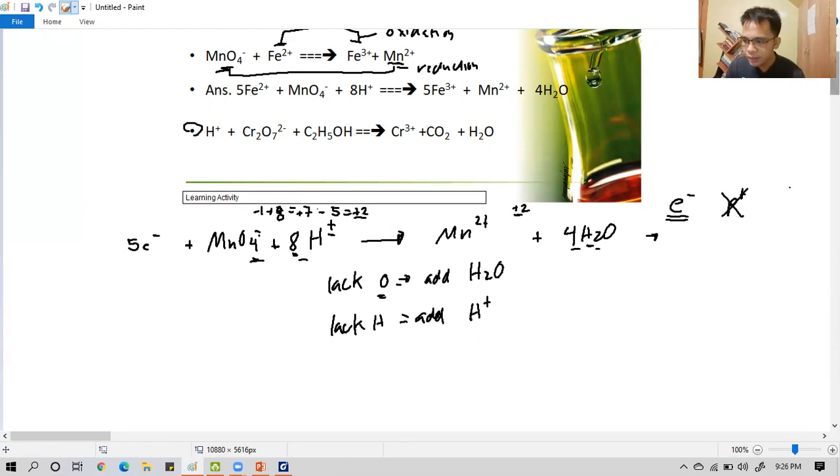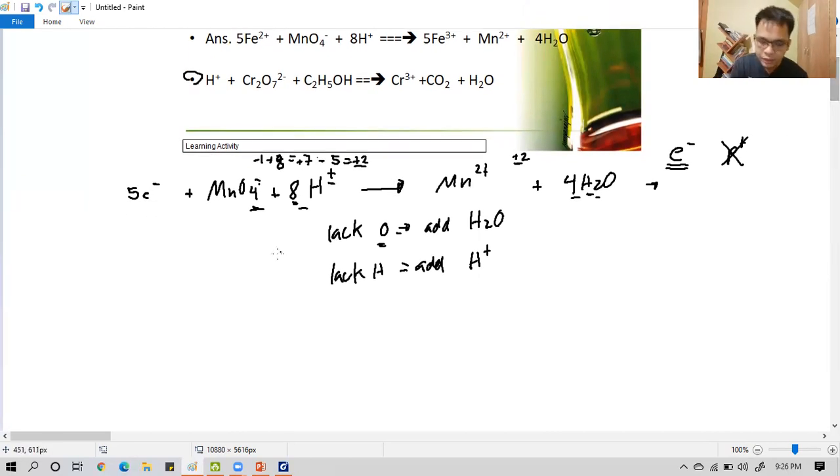How about our iron? For iron, Fe2+ becomes Fe3+. You'll notice the elements are already balanced. What's not balanced are the charges. So positive 2, positive 3, so add electron. One electron only, so it becomes positive 2 and positive 2. So balanced.